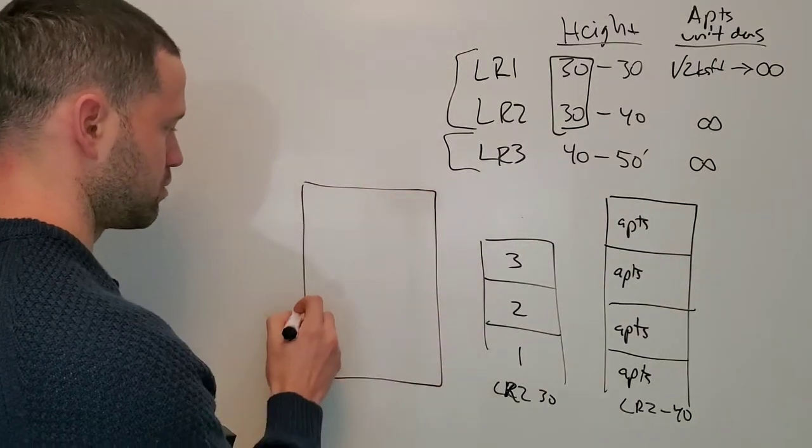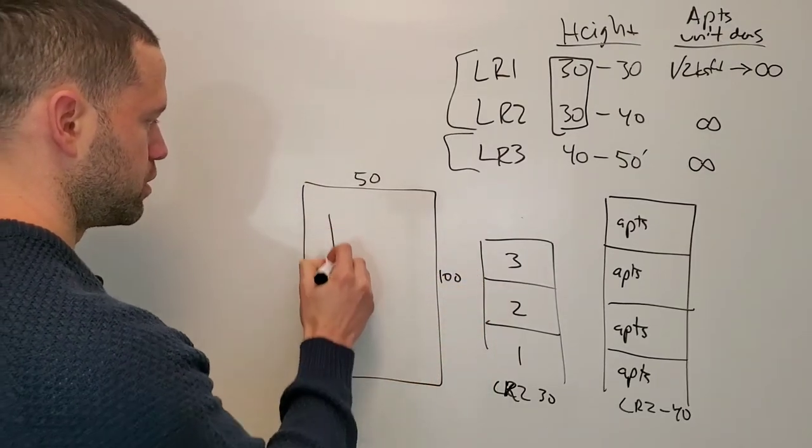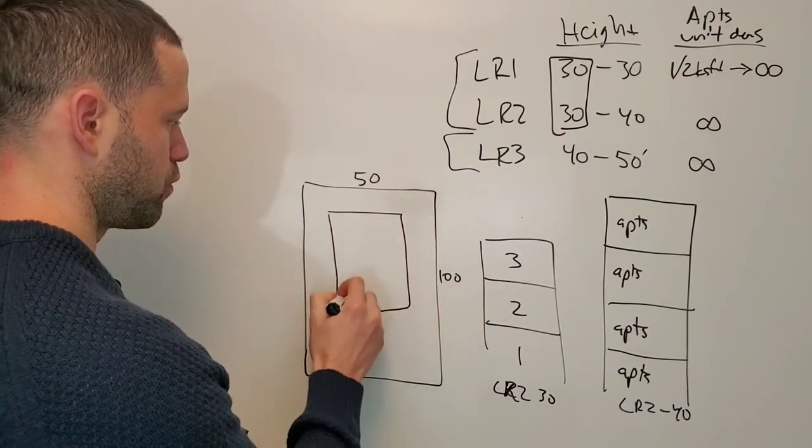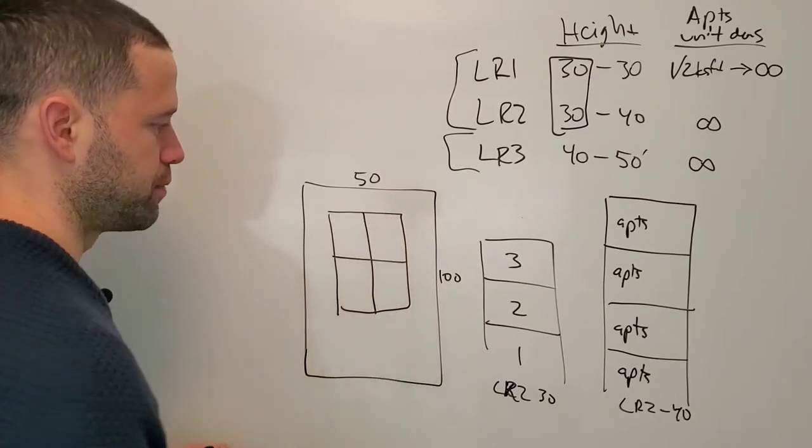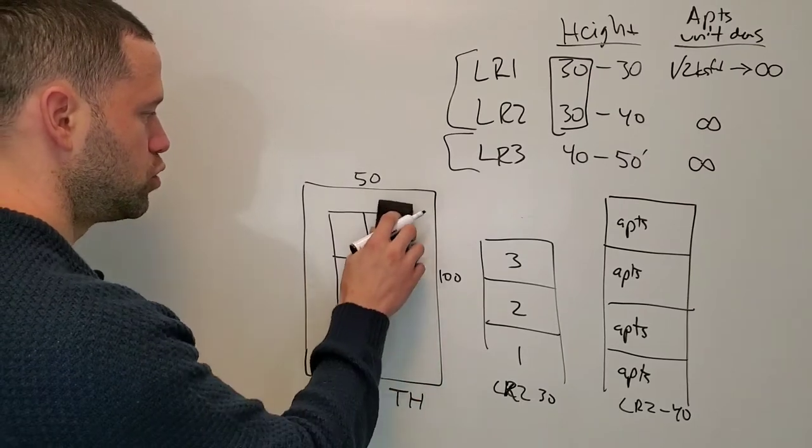On a lot—let's say 50 by 100—back in the day you could build four townhomes on this lot.